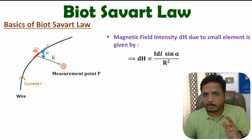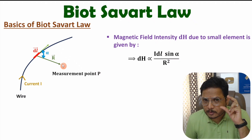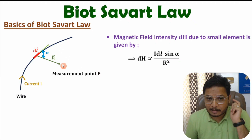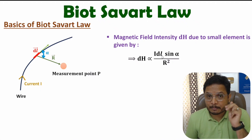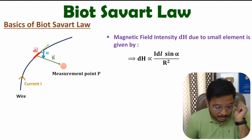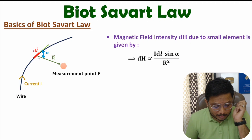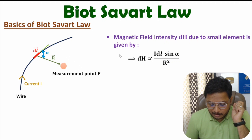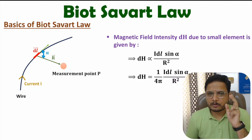Biot-Savart law states that magnetic field intensity dH due to small differential length dl is directly proportional to I·dl as well as sine alpha, where alpha is the angle between dl and position vector r, and it is inversely proportional to the square of distance between dl and measurement point P. The proportionality constant is 1 by 4π. This is the basic statement of Biot-Savart law.